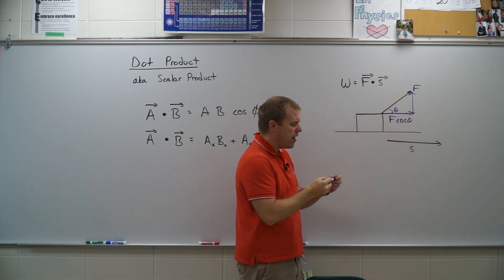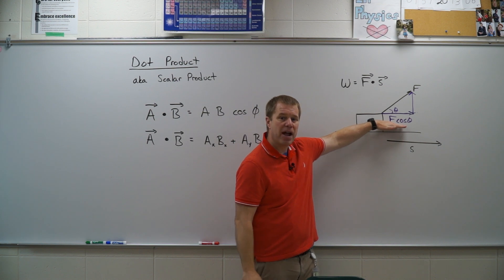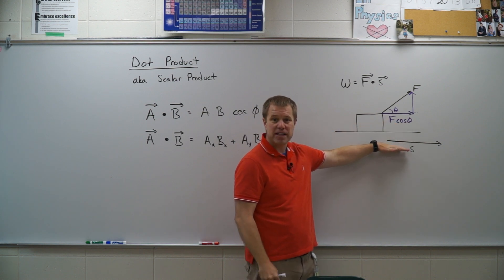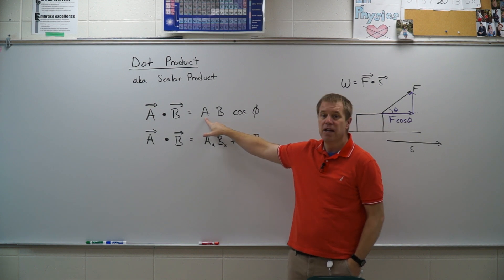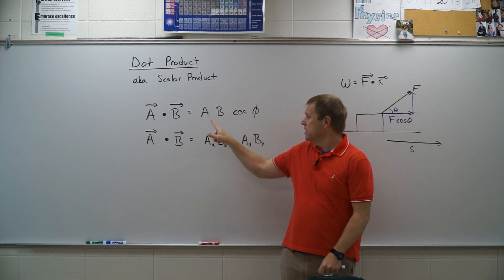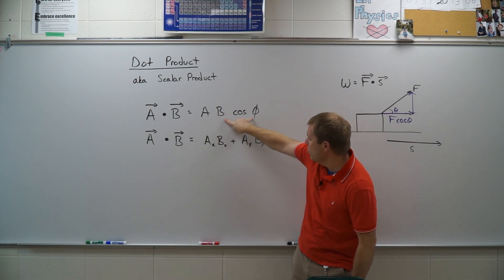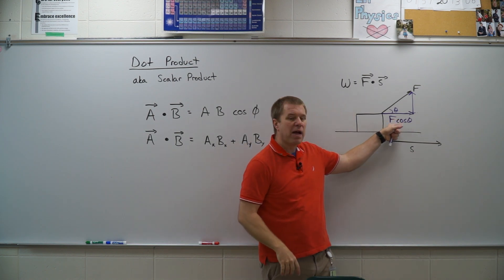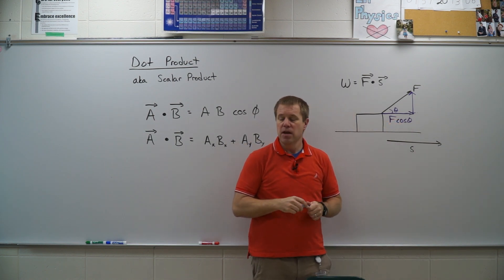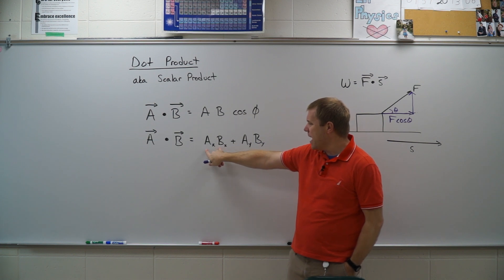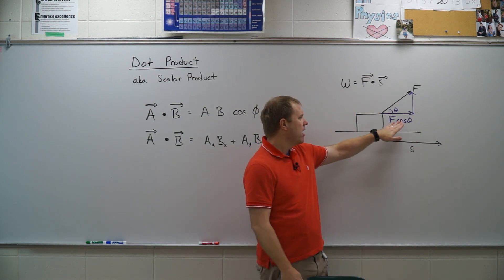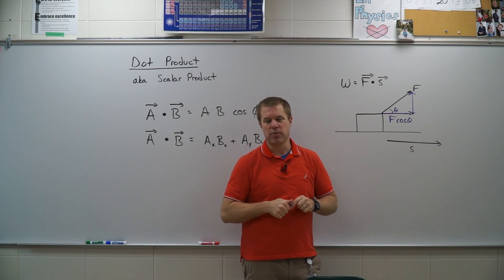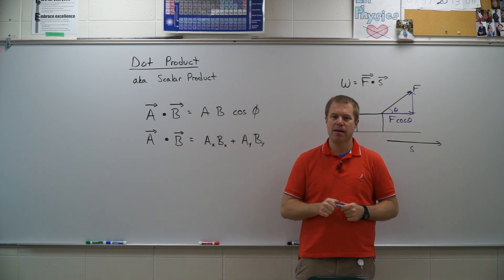So the idea is I want to find the component that is parallel with the displacement, and so that's the kind of idea we're going for here. We're going to multiply the magnitude of one times the component of the other that is parallel with it. The other option is we can find the x components and the y components. This is if they are both at angles and we don't know the angle between them. We would use that method. So that's the dot product.